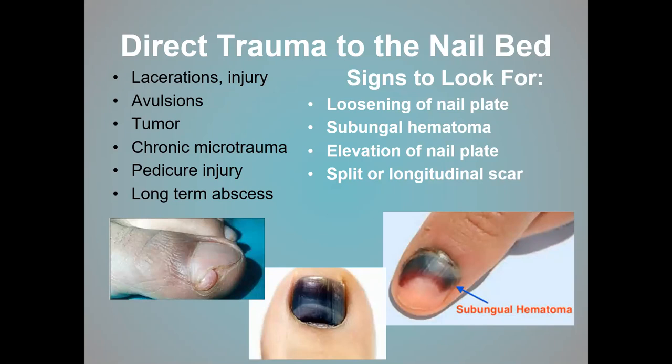You can have direct trauma to the nail bed — a laceration, crush injury, or something falling on the toe. You can also have microtrauma: small repeated traumas over time. For example, a runner often experiences jamming of the nail, damaging the nail bed and producing a subungual hematoma. Additionally, a tumor within the nail bed can put pressure on the nail plate and cause onycholysis. A bone spur on the bone beneath the nail plate can also cause chronic microtrauma on the nail bed, resulting in separation of the nail plate.